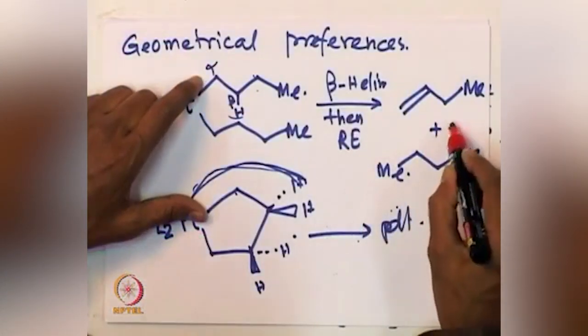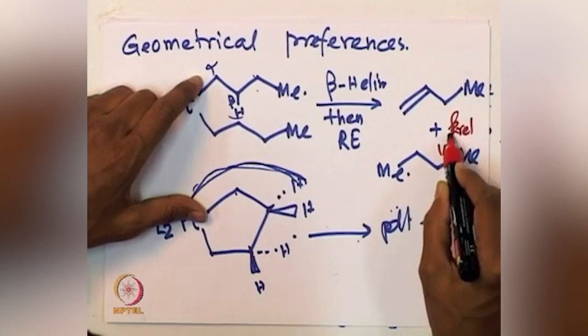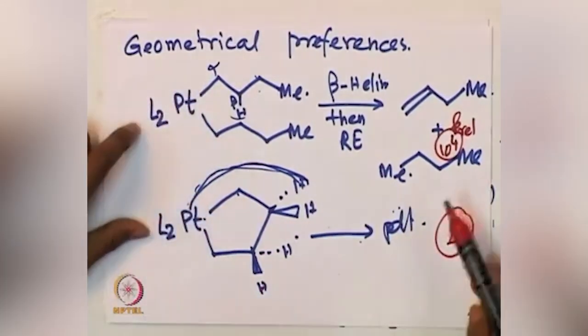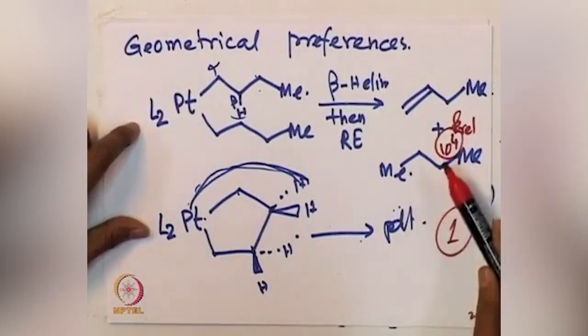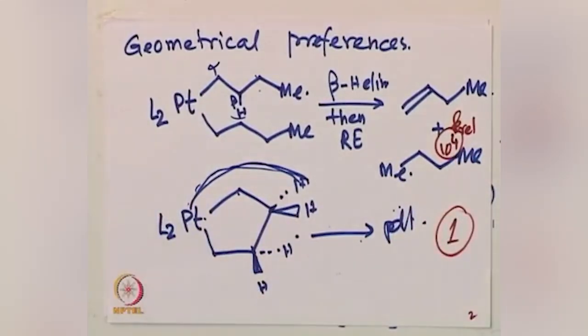The relative rate for this reaction — K_relative — is something like 10^4 versus 1, emphasizing a large difference. In a strained situation we have very slow beta hydride elimination, whereas in a normal, strain-free situation beta hydride elimination is much faster. This is one of the problems — rather than a benefit — for many cross-coupling reactions, as it creates side reactions and complications.